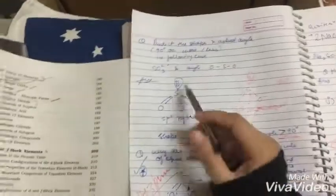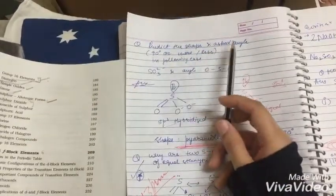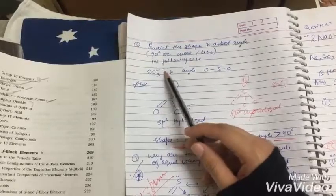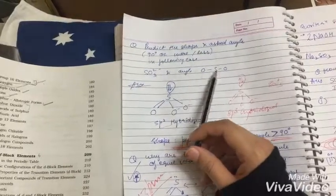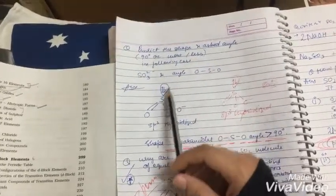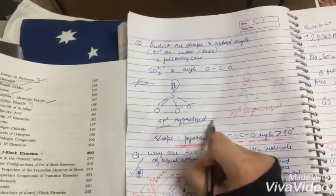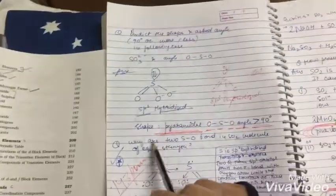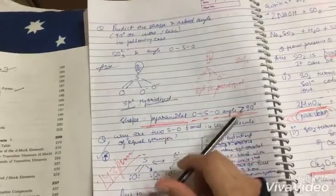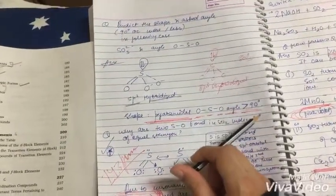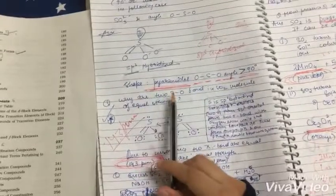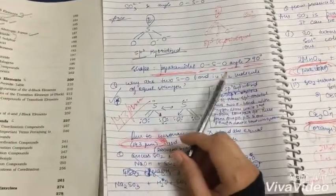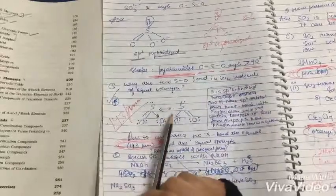Next: predict the shape and ask angle 90 degree more or less in the following case. SO3^2- and angle O-S-O. This is SP3 hybridization. SO3^2- has pyramidal shape and the angle is greater than 90 degrees.